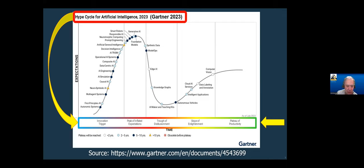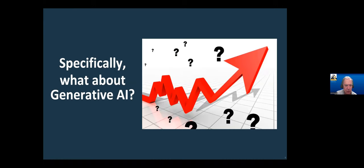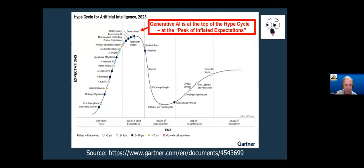Gartner has analyzed many different technologies and many types of organizations, and this pattern repeats itself. This is specifically the hype cycle for artificial intelligence — this article was just published last month, July of this year. What's at the very peak of this hype cycle? At the very peak of inflated expectations: generative AI. So we're right at the place where we probably should be a little scared.